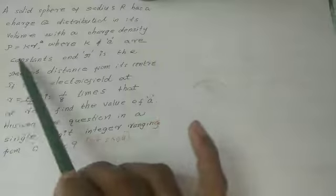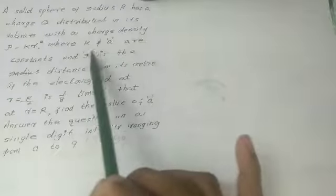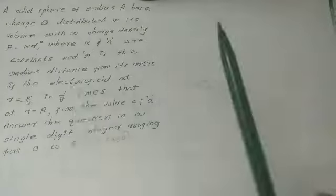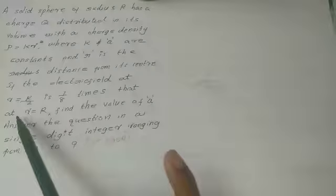rho equals k r to the power small a, where k and a are constants and small r is the distance from its center.